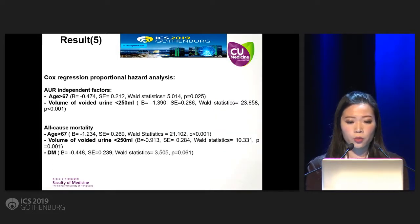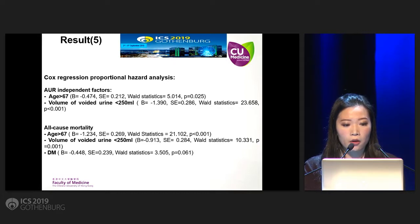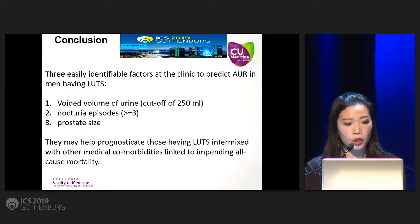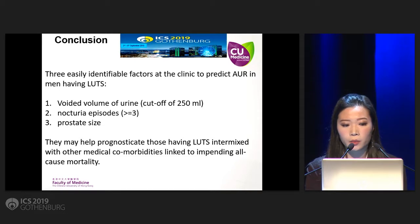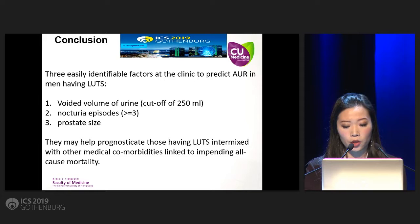With Cox proportional hazard regression analysis, we found that acute urinary retention independent factors include age greater than 67 and voided volume less than 250 milliliters. For all-cause mortality, it includes both of those factors as well as diabetes. In conclusion, three easily identifiable factors in the clinic to predict retention in men with lower urinary tract symptoms include voided volume with a cut-off of 250 milliliters, nocturia of three or more times per night, and prostate size. This may help in prognosticating those with lower urinary tract symptoms alongside other medical comorbidities.